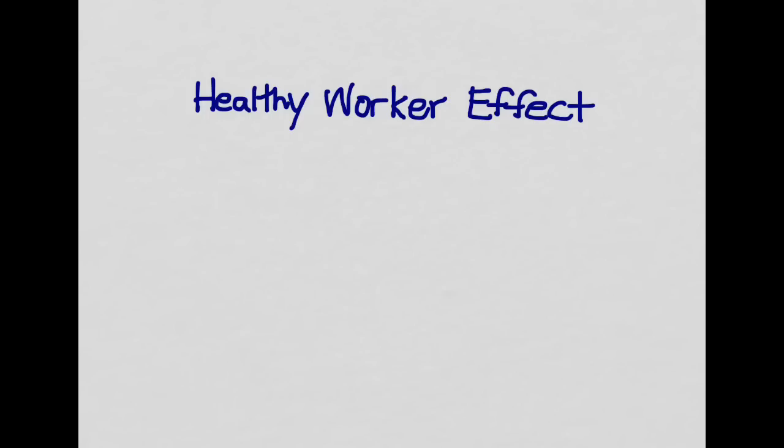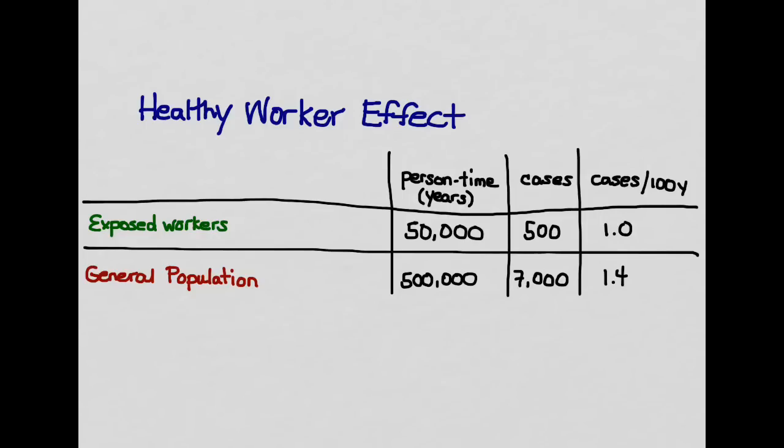And this bias makes it look like the people who were exposed to toxins are healthier than people who were not exposed to toxins. So this shows our study population. We have a cohort, and we are comparing the cohort of exposed workers to a cohort from the general population.